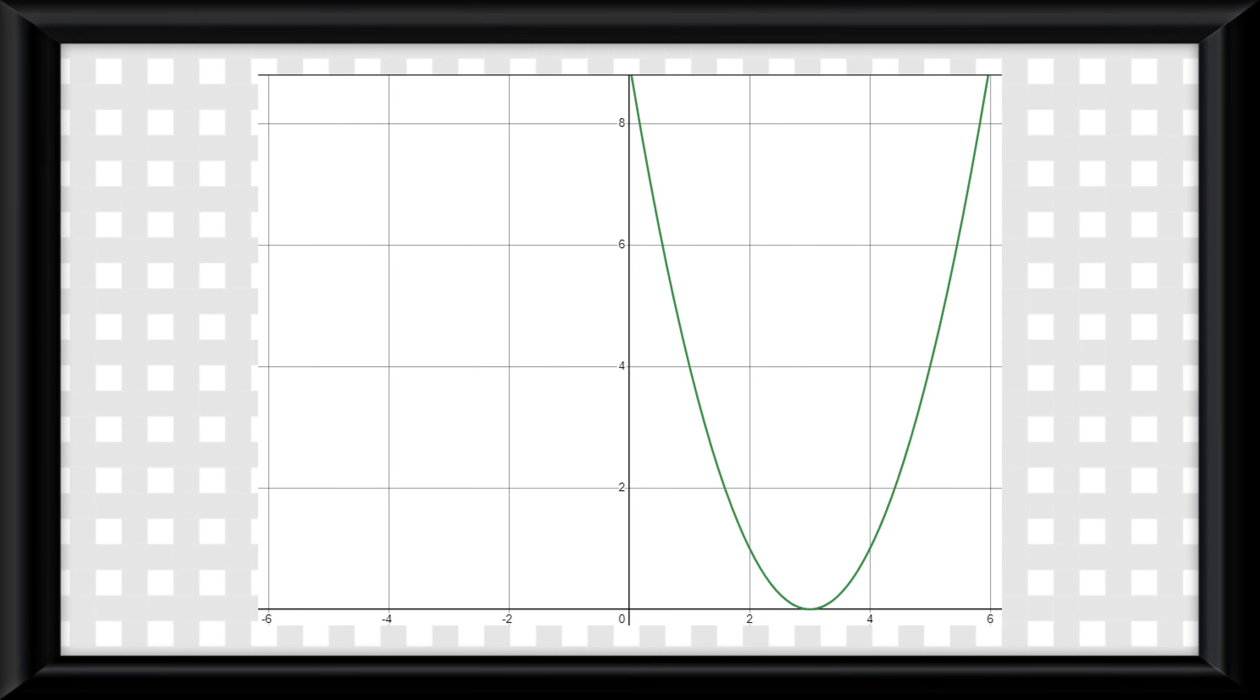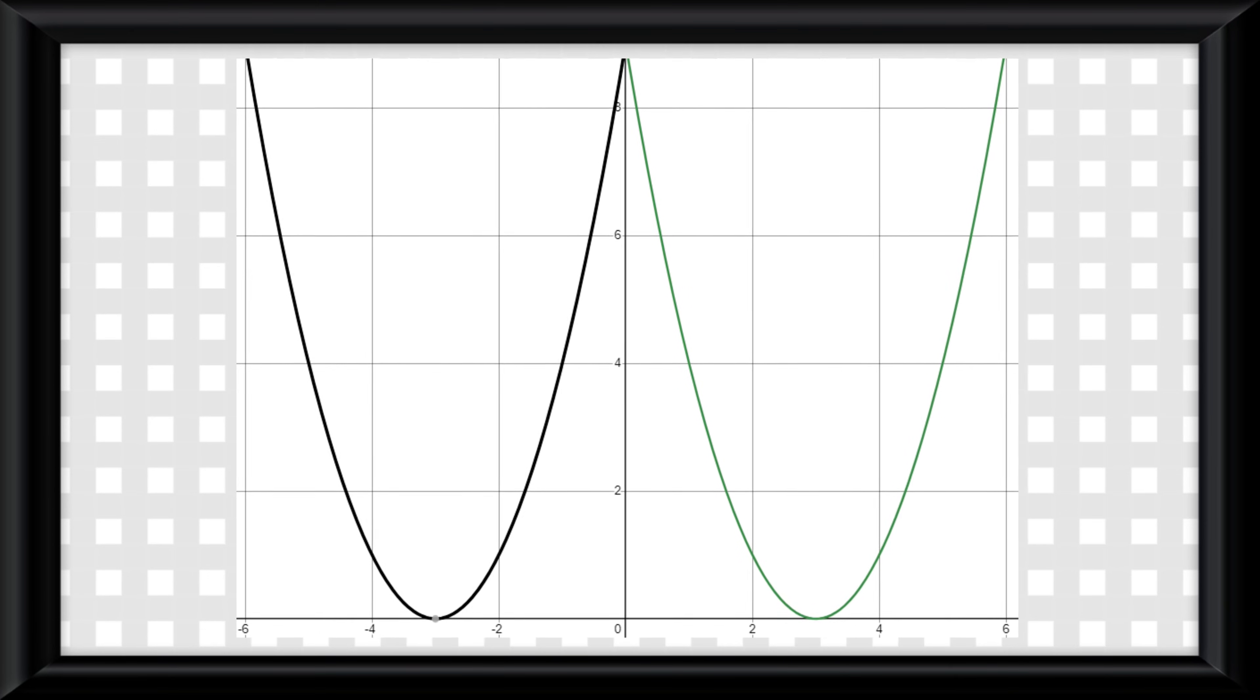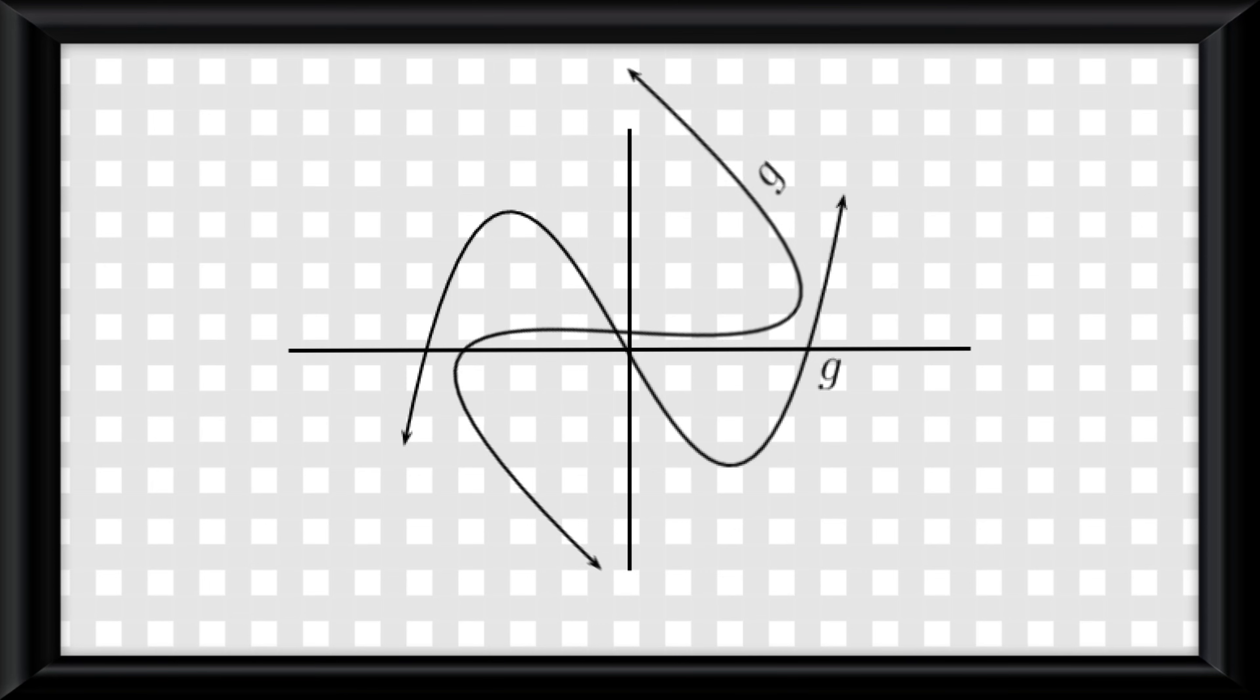Okay, final thing. A function is even if it satisfies the property f of negative x equals f of x, or if reflected across the y-axis, the graph looks the exact same. A function is odd if it satisfies the property f of negative x equals negative f of x, or if rotated across the origin 180 degrees, it remains looking the exact same.